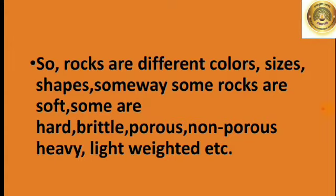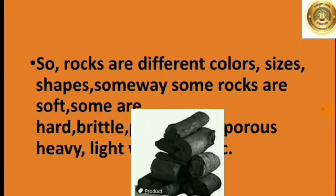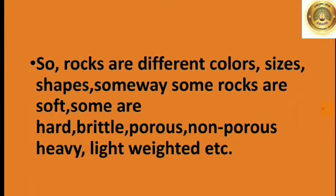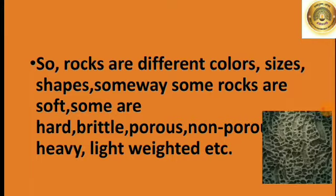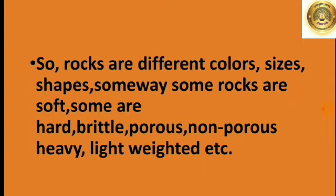Some rocks are soft, some are hard, and some are brittle. Brittle means which can be easily broken — for example, sandstone and quartz. Here, coal is shown which can be easily broken. Then some rocks are porous. Porous means rocks which have small holes, and they allow water, liquid, and air to pass through.